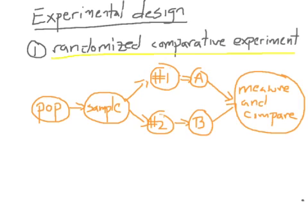This picture outlines what we do. The first thing you do is start with your population, then you take a sample. We talked last section about exactly how that works — there are lots of different ways to take a sample, but almost always you'll do it using an SRS. Let's say for simplicity here that your sample is of size 100.